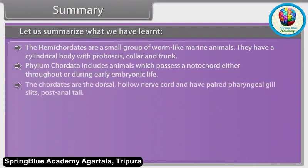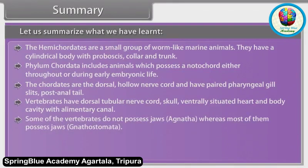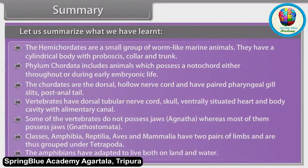Additional facts — Vertebrates have a dorsal hollow nerve cord, paired pharyngeal gill slits and a post-anal tail. Vertebrates have a dorsal tubular nerve cord, skull, ventrally situated heart and a body cavity with alimentary canal. Some vertebrates do not possess jaws (Agnatha), whereas most of them possess jaws (Gnathostomata). Amphibians have two pairs of limbs and are thus grouped under Tetrapoda, having adapted to live both on land and water.